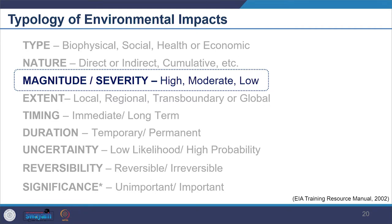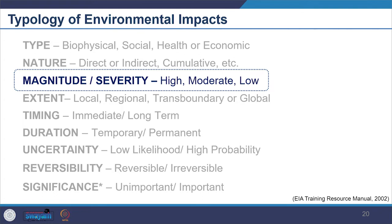When we talk about cumulative impact over a longer period of time, the impact can be of different magnitude or severity — such as high magnitude, moderate, or low magnitude. For example, air pollution happening at low levels within standards might be in an acceptable range compared to a high level of pollution. Severity is also looked into — for example, toxic pollution in soil causing leprosy versus increased noise causing headache or irritation.